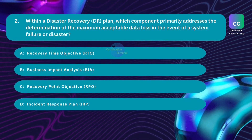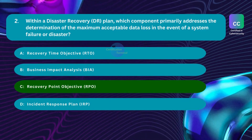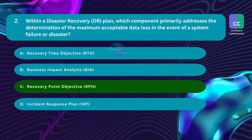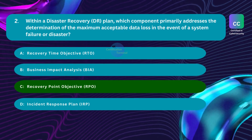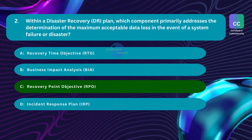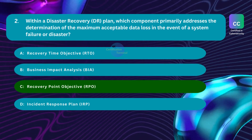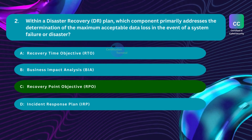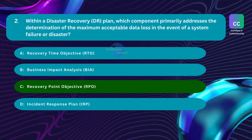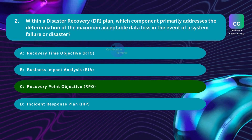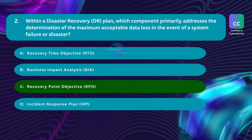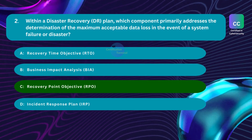The correct answer is Option C: recovery point objective, RPO. In the context of a disaster recovery plan, the component that primarily focuses on defining the maximum tolerable data loss is the recovery point objective, RPO. RPO is the targeted time frame within which data loss is deemed acceptable in the event of a system failure or disaster. It specifies the point in time to which systems and data must be restored, ensuring the organization can resume operations with an acceptable level of data loss.